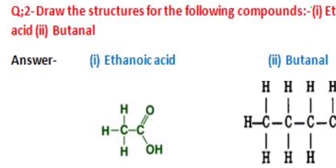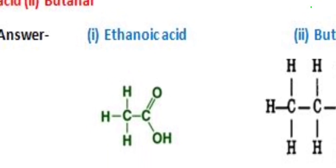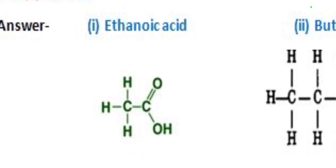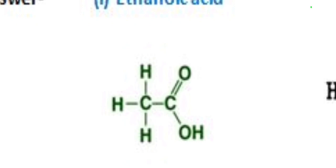First we see the structure of ethanoic acid. One carbon shares its bonds with three hydrogen atoms, and one bond of carbon is shared with another carbon. The second carbon shares a double bond with oxygen, one bond with carbon, and one bond with oxygen, and that oxygen shares its one bond with hydrogen. This is the structure of ethanoic acid.